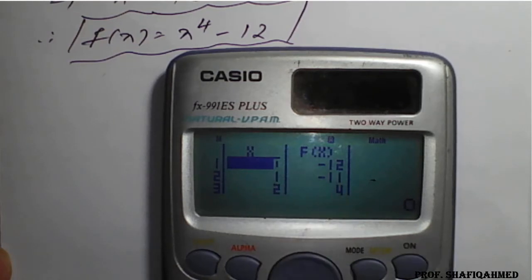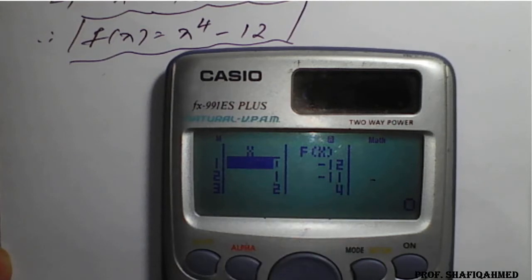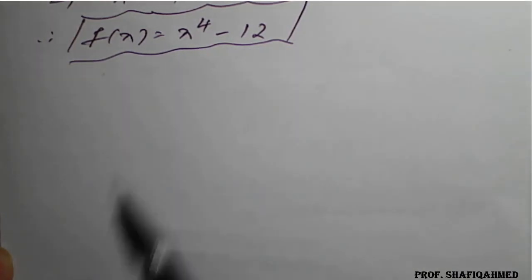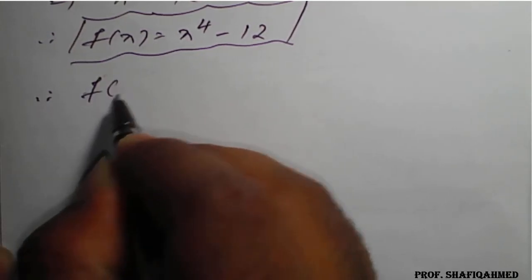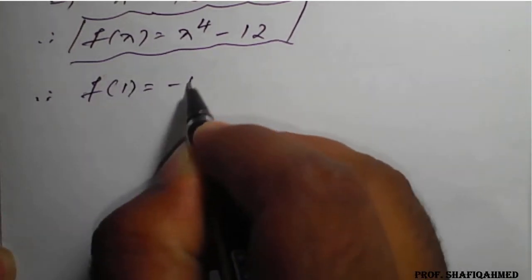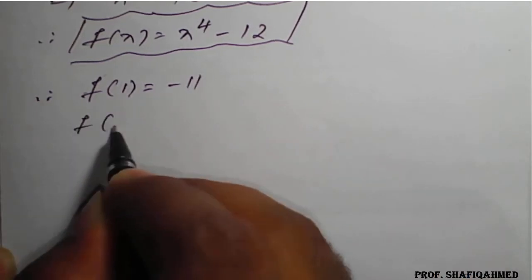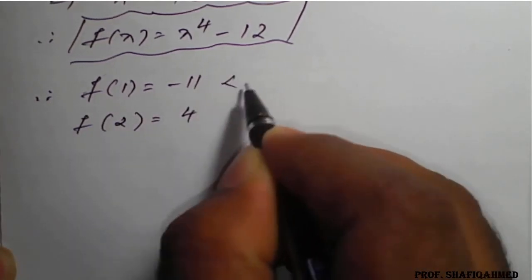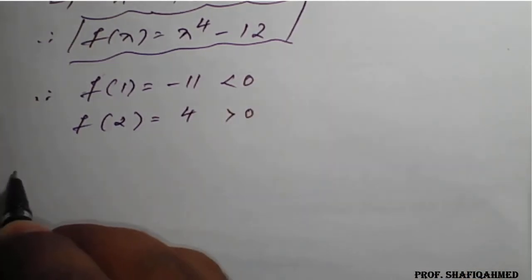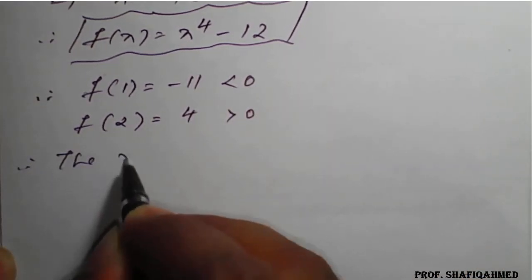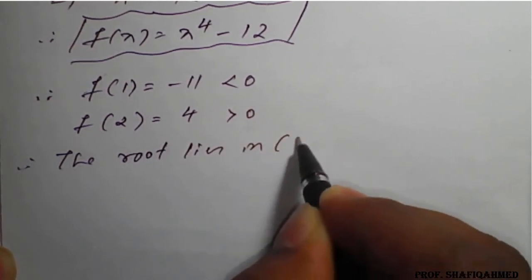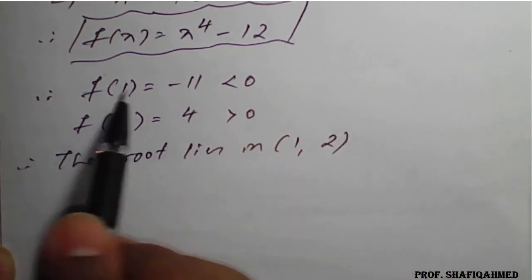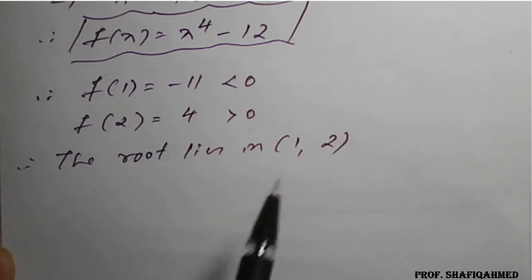We got a negative and a positive value. So f(1) = −11 and f(2) = +4, which is negative then positive. Therefore, the initial root lies in the interval [1, 2], where 1 gives a negative value and 2 gives a positive value.